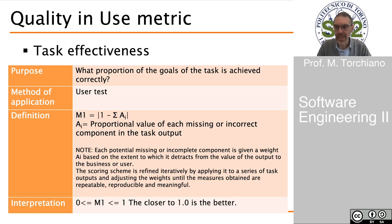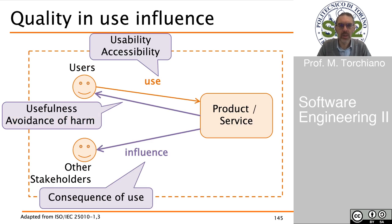In general, keep in mind that when we talk about quality in use, we try to look at how the usage of the software influences not only the users but also the stakeholders. The use of the product or software service affects the user in terms of usefulness and avoidance of harm, and we also have to consider the consequences of use — that is, the influence the software has on other stakeholders.